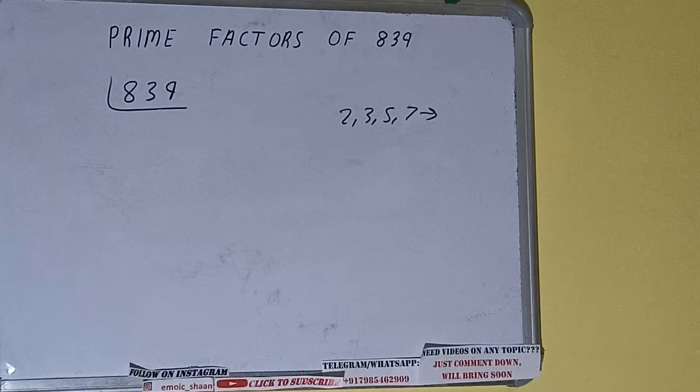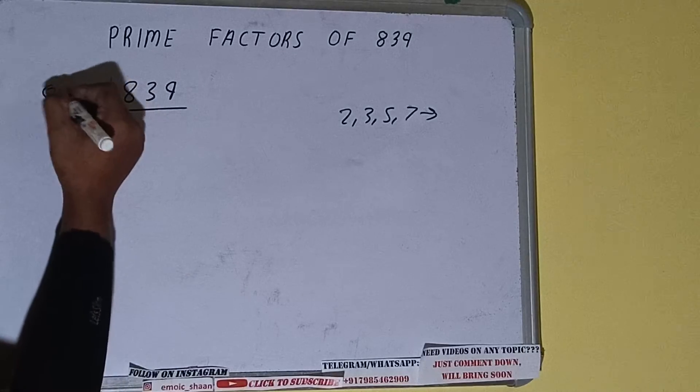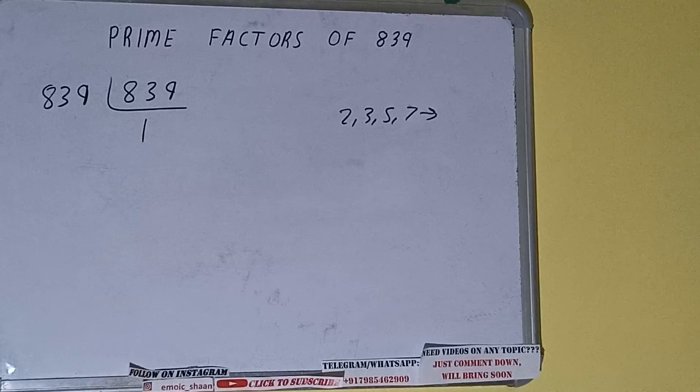All right. So if we talk about the number 839, the number 839 is also a prime number. It is only divisible by itself, that is 839, and once we do so we'll be getting 1.